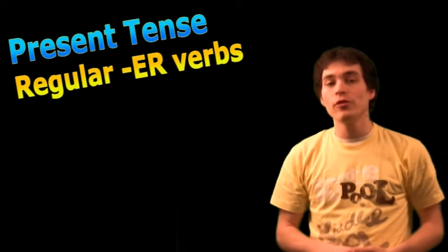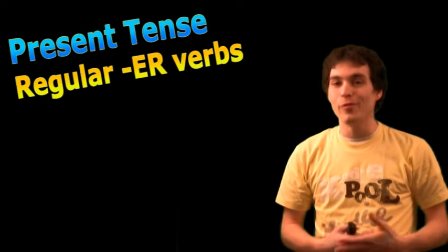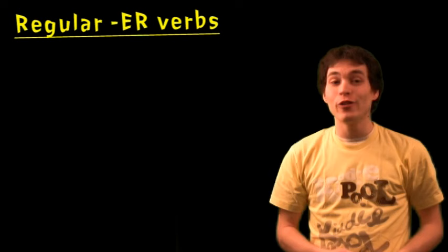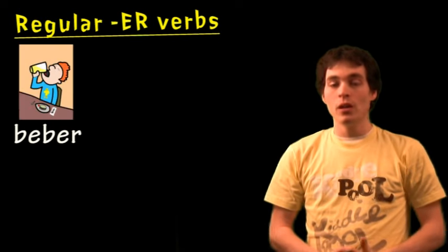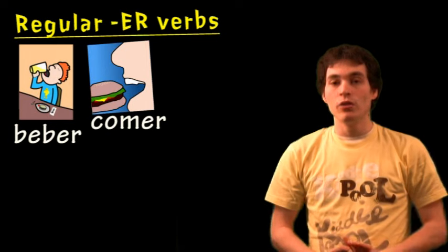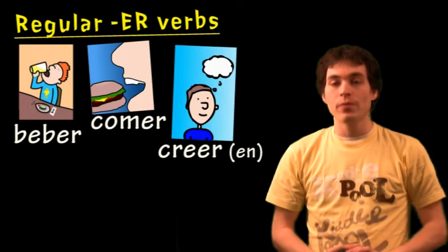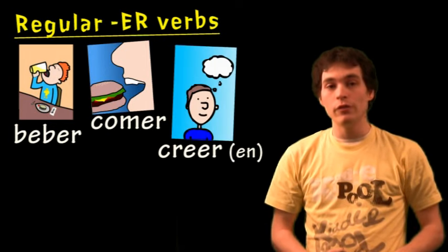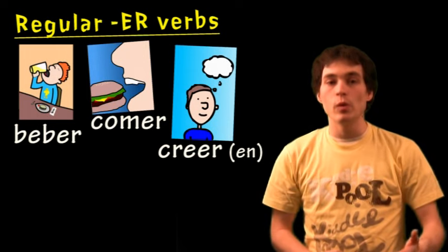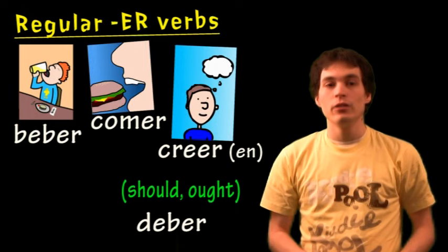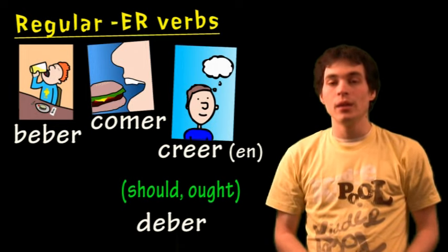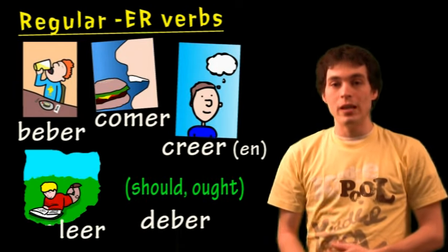Hola! So far we've gone over AR verbs in Spanish. There's another type that is called ER verbs — you should quickly figure out why we call them that. Some examples of regular ER verbs are: beber (to drink), comer (to eat), creer (to think or to believe), and if you believe in something we'll use creer en. Deber means should or ought. Leer means to read.